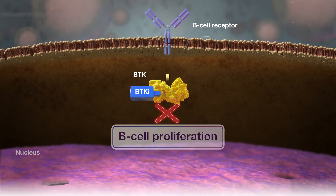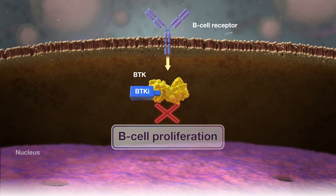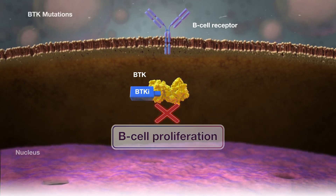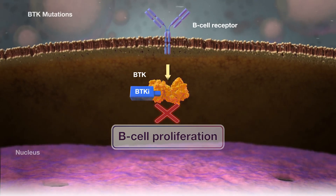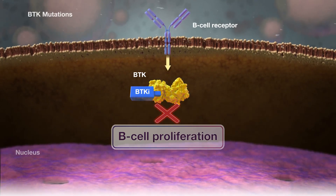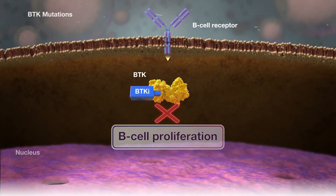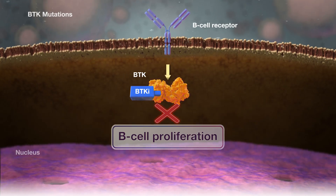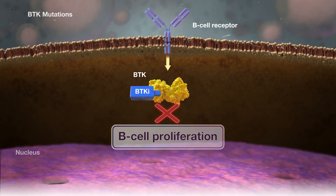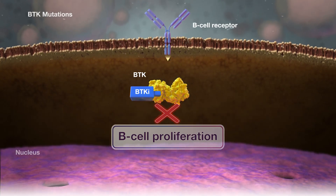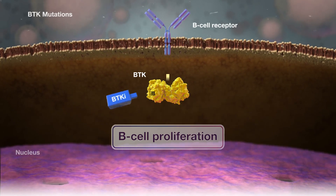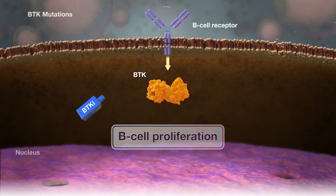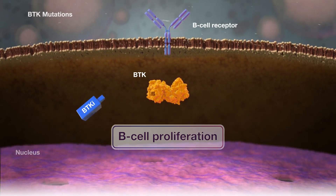Over the course of treatment with BTKIs, mutations in BTK may emerge. In fact, BTK mutations are found in about 65% to 80% of relapsed patients at the time of disease progression. These mutations may be associated with resistance to BTKIs based on preclinical data.